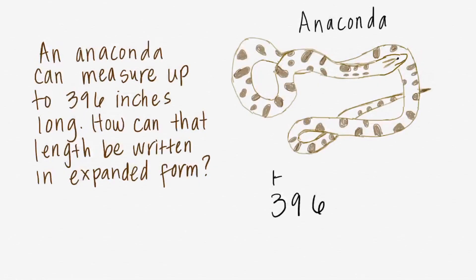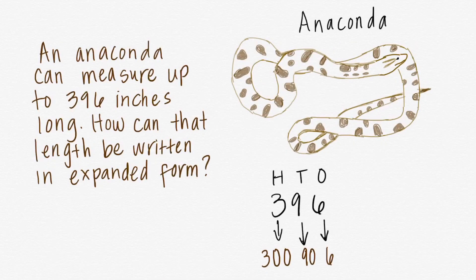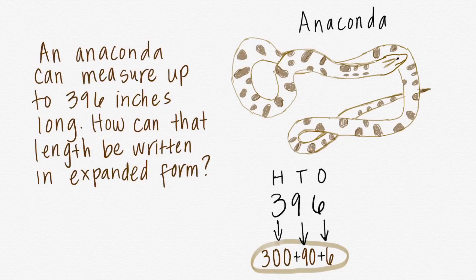We have to label our hundreds place, our tens place, and our ones place. The three is in the hundreds place, which means it's three hundreds, which makes 300. The nine is in the tens place, which makes nine tens, and that is 90. The six is in the ones, so that's just six. We simply add plus signs because 300 plus 90 plus 6 equals 396. The answer is 300 plus 90 plus 6.